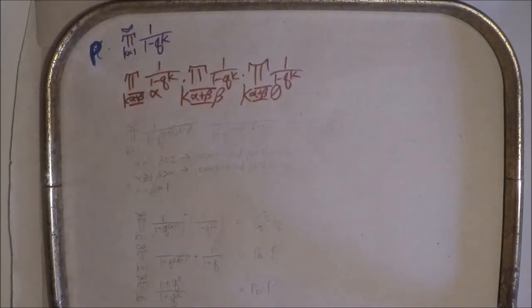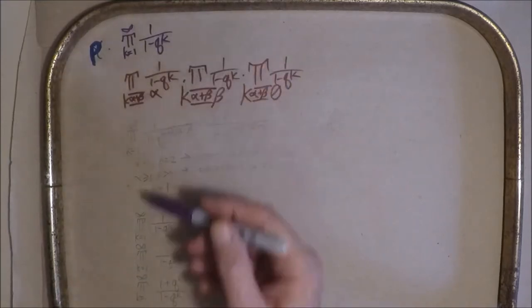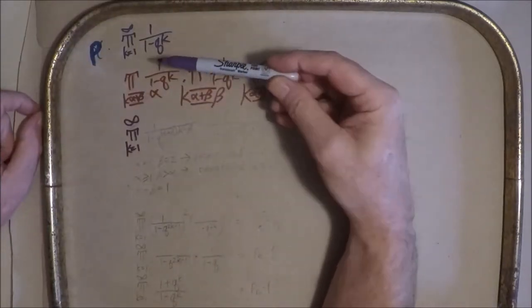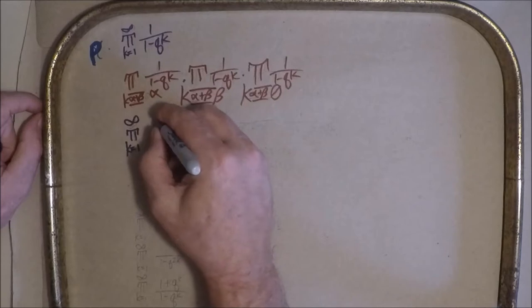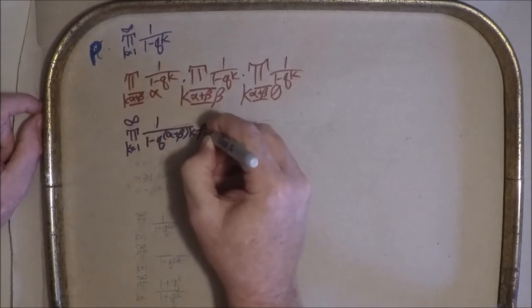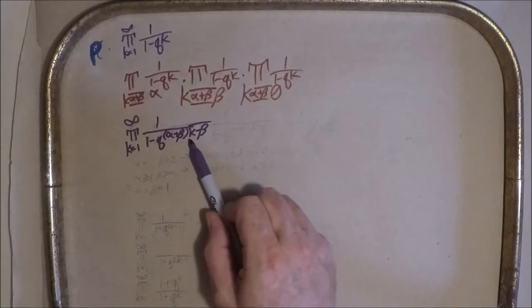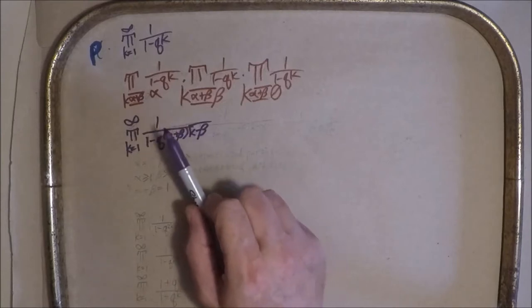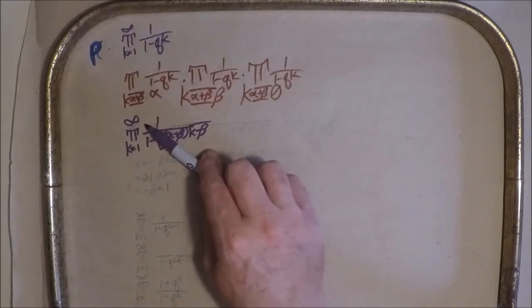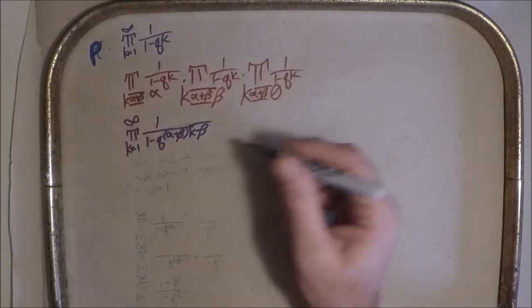now we can employ the trick of changing our exponent on Q so that our index on K can be the whole deal from one to infinity in this first term then becomes one over one minus Q to the alpha plus beta K minus beta. So that when K equals one, we have alpha plus beta minus beta giving us alpha. When K equals two, we have two alpha plus two beta minus beta giving us two alpha plus beta. Subtract or take out the alpha beta by the mod operation. We're left with the alpha. So this will restrict to just the exponents that are alpha mod alpha plus beta.